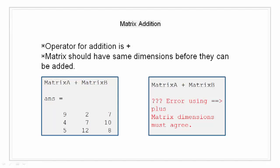So, we are able to add them as both have the same dimension. Say for example, if we have a mismatch of dimension, we will see an error as shown on the right side.